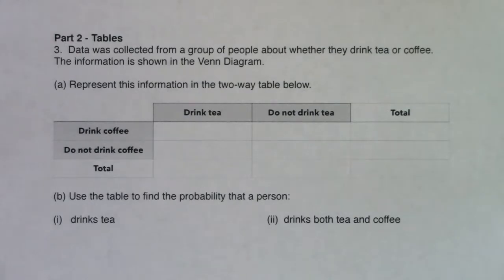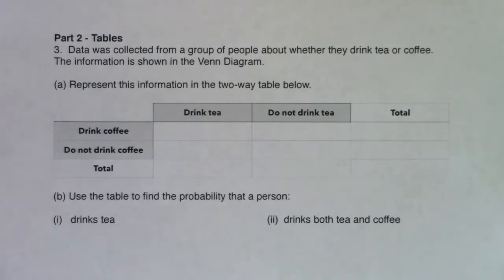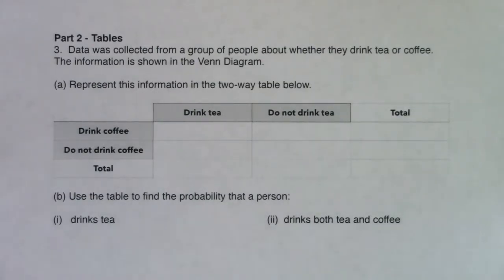Let's start to look at a table problem. We're going to use the same setup — data was collected from a group of people about whether they drink tea or coffee. The information is shown in the Venn diagram from number two, and we're going to represent this information now in a two-way table.